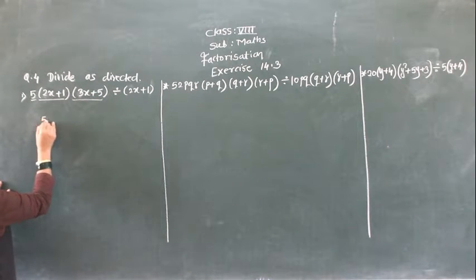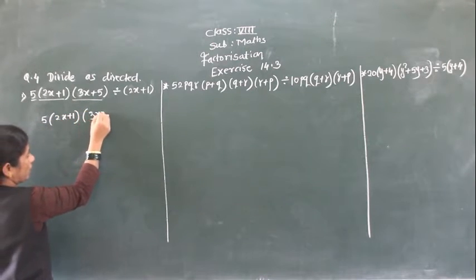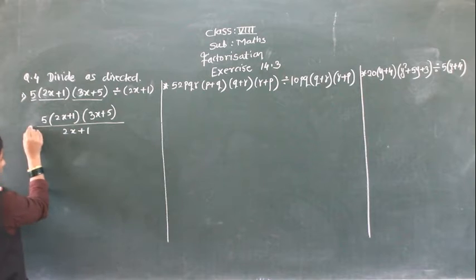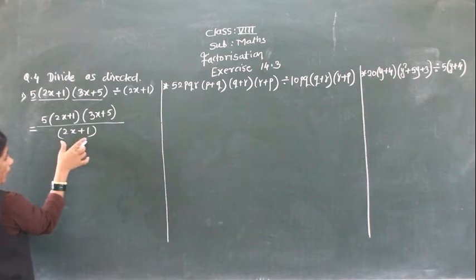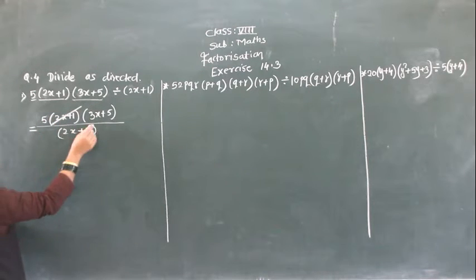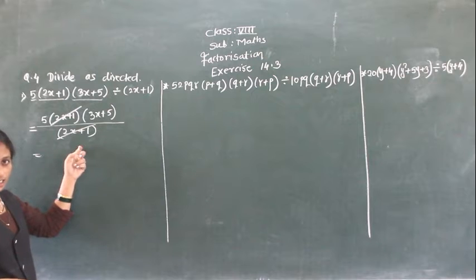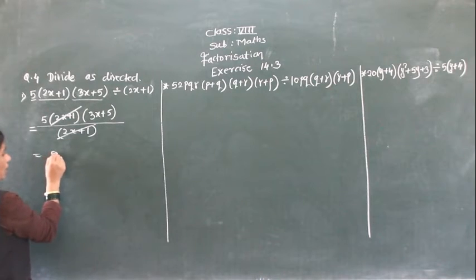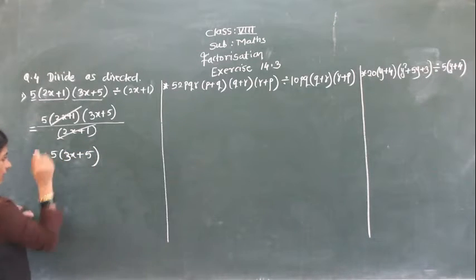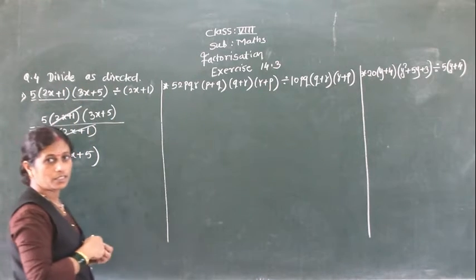Also you can see here: 5 in bracket, (2x plus 1), (3x plus 5) divided by (2x plus 1). Now this (2x plus 1) and this (2x plus 1) — the multiplier and divisor will get cancelled. So what is remaining: numerator has this, and denominator becomes 1. So we can write here 5 in bracket (3x plus 5). Then you will get the direct answer. If you do like this, then also you will get 5 into (3x plus 5).